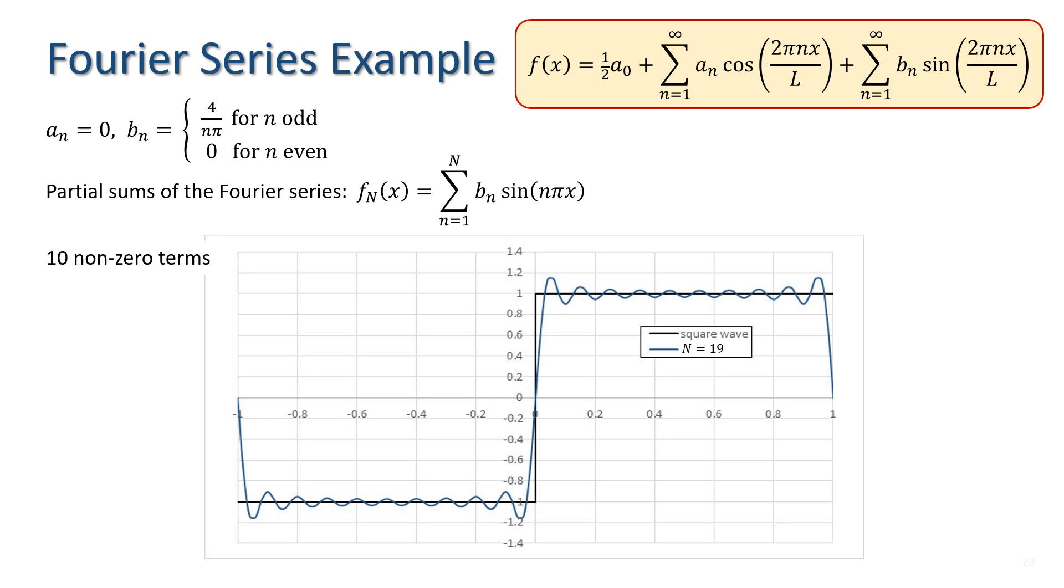We can see that as the number of terms increases, the partial sum of the Fourier series gets closer to the square wave it approximates. It is converging.